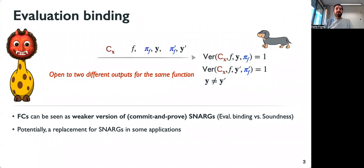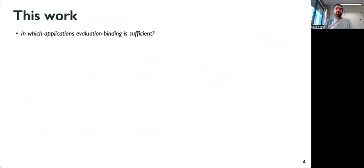Given this observation, it is an interesting question whether we can replace SNARKs with functional commitments in some applications with the benefit of having a notion which is falsifiable and potentially realizable from falsifiable assumptions. In this work, we ask in which applications evaluation binding is sufficient.